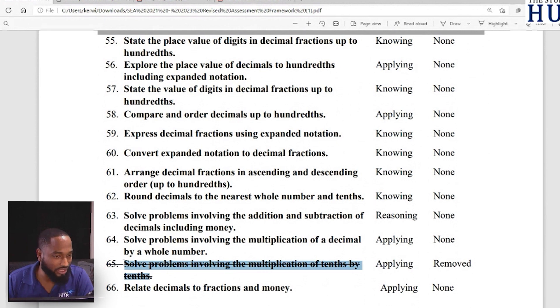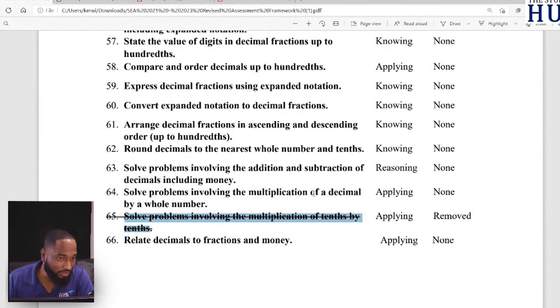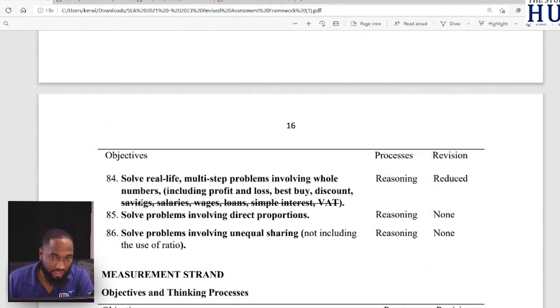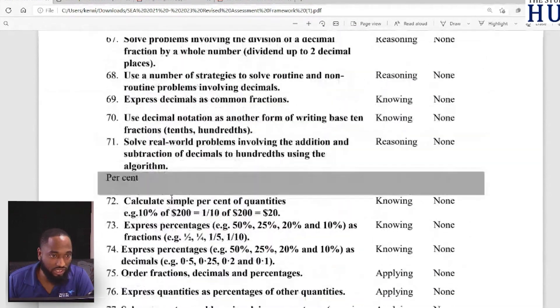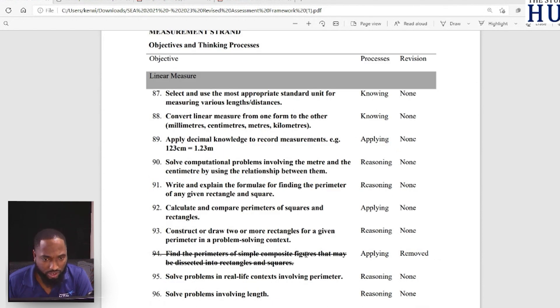For decimals, solve problems involving the multiplication of tenths by tenths - this carries the same concept. If you have 0.123 multiplied by 0.2, tenths multiplying by tenths, that's been completely removed. You still need to know how to multiply decimals by whole numbers. This has been reduced - solving real-life multi-step problems involving whole numbers. Profit and loss is there, best buy is there, discount is there, but savings, salary, wages, loans, simple interest, VAT - also out.